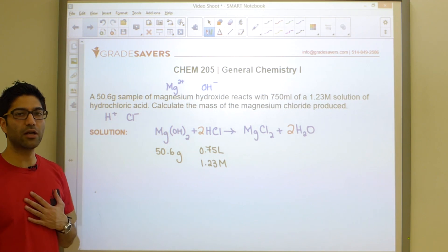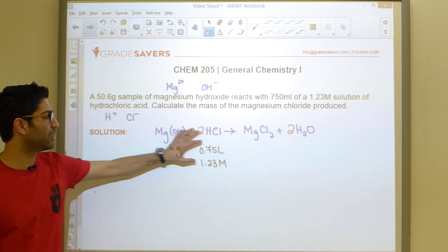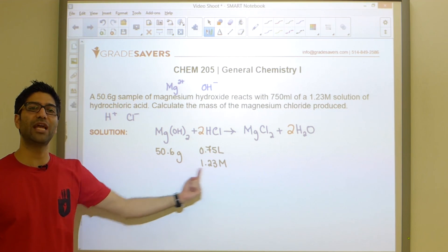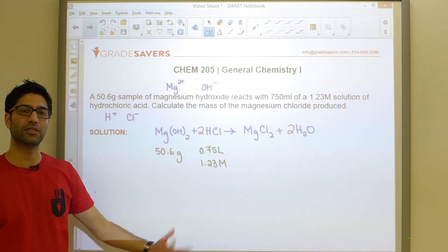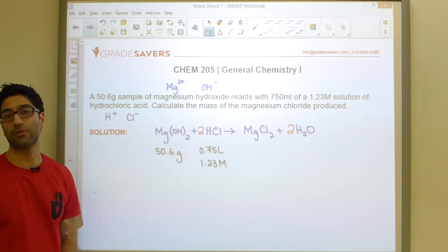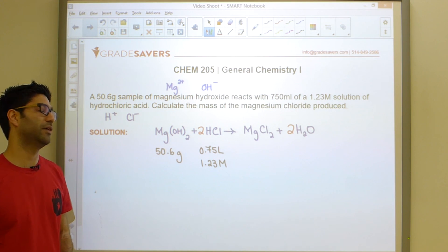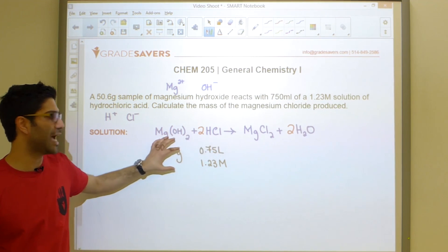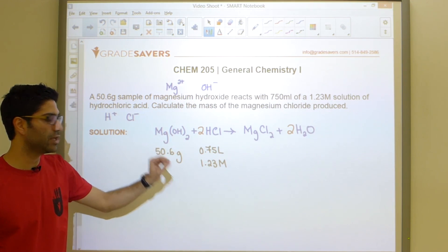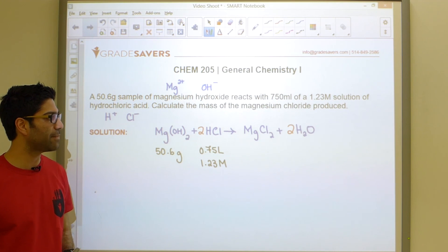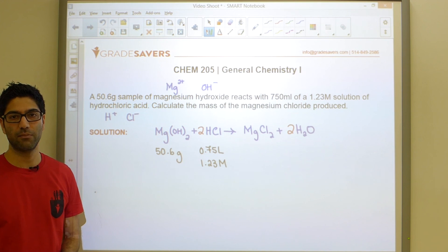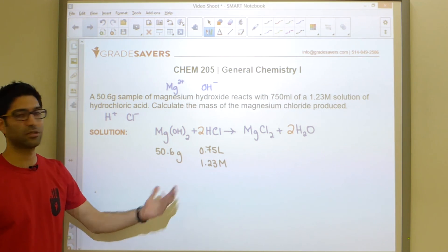In this problem, we are given information about more than one reactant. The minute you have information about more than one reactant, it is a limiting reagent stoichiometry problem. This is how you diagnose this type of a problem. If you are given information about more than one reactant, this is a limiting reagent stoichiometry problem and our next step automatically becomes to figure out which one of these guys is limiting because that is the guy you're going to use to solve the rest of the problem.